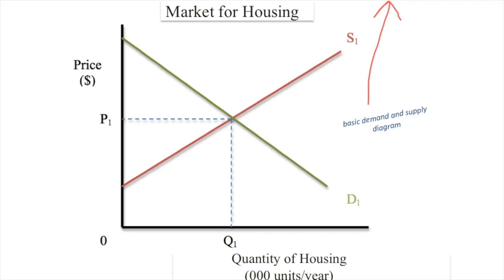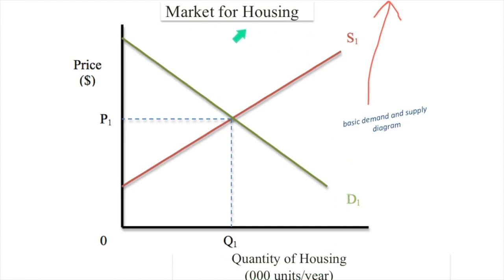In microeconomics, it's the basic demand and supply diagram, which has the components of price — dollar sign or any currency — P1, zero, Q1, quantity of housing, number of units, the year, Demand 1 (D1), S1 (Supply 1), and a title. So what is a price ceiling? It is a maximum price.